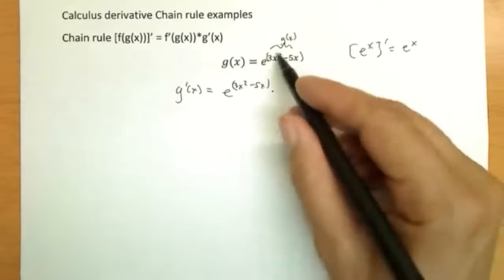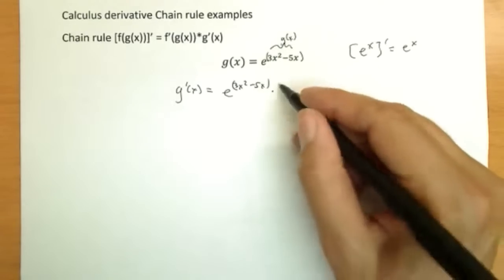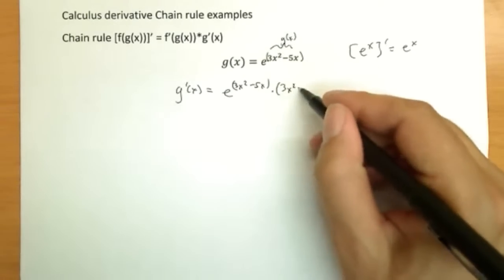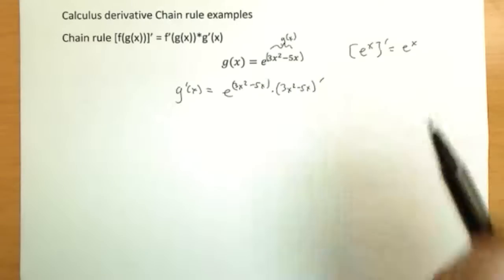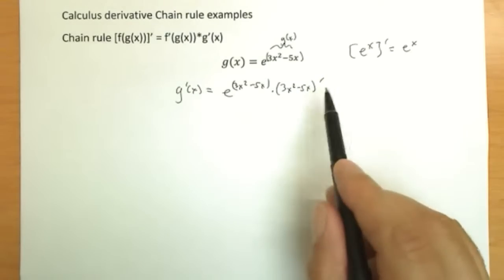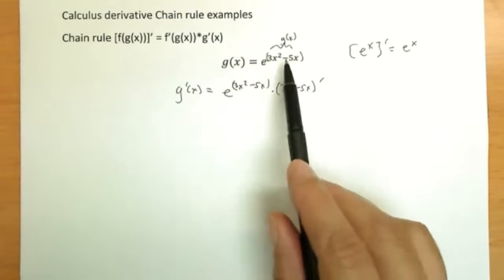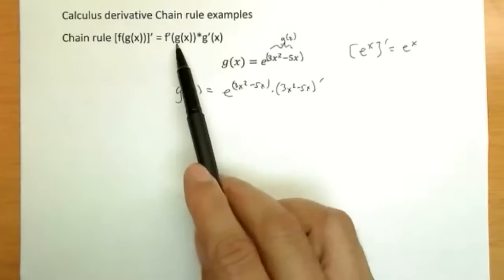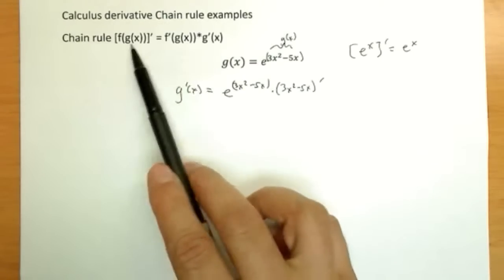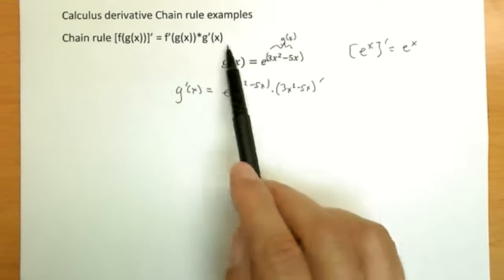Times g prime of x. So times g of x is this, and we need to take its derivative. I'm going to delay actually doing that, and simply write times 3x squared minus 5x prime. So e to something's derivative is e to the something. However, we've ignored g of x in part of the chain rule, so we'll take it times the derivative of g of x.